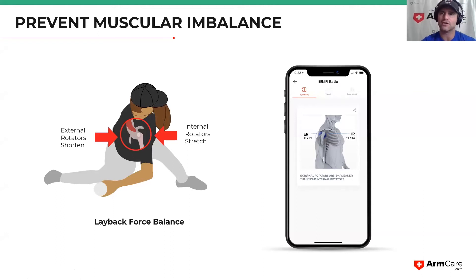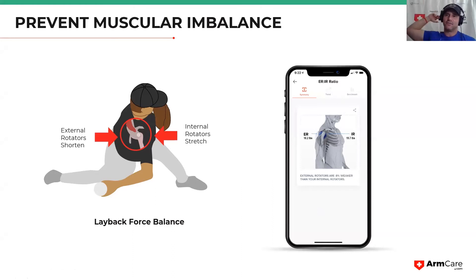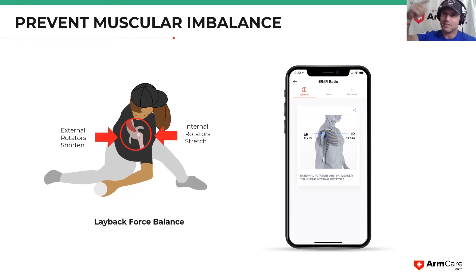Let's talk about some muscular imbalances, starting with the shoulder — internal versus external rotator cuff. If external rotators, which lay the arm back, are stronger than internal rotators that accelerate the arm forward, that can cause a SLAP tear. The internal rotators can't decelerate well, putting extra load on the bicep tendon. The bicep tendon connects to the labrum, and on a peel-back mechanism — as the arm goes back and the tendon creates torsion — it can peel the labrum off the glenoid. That is a SLAP tear.